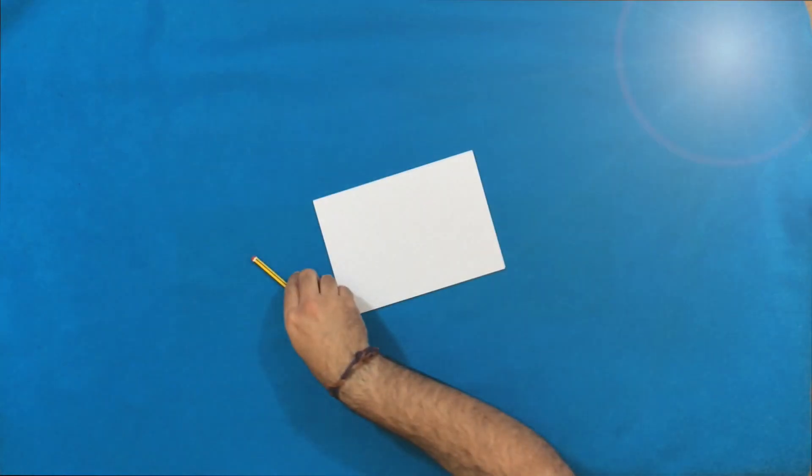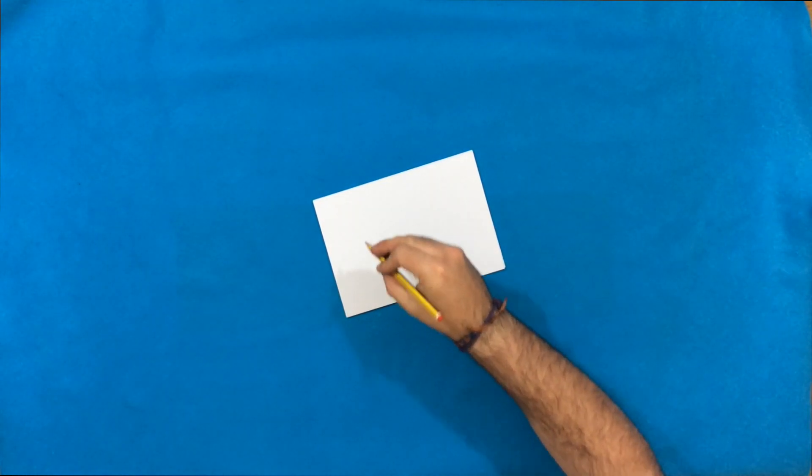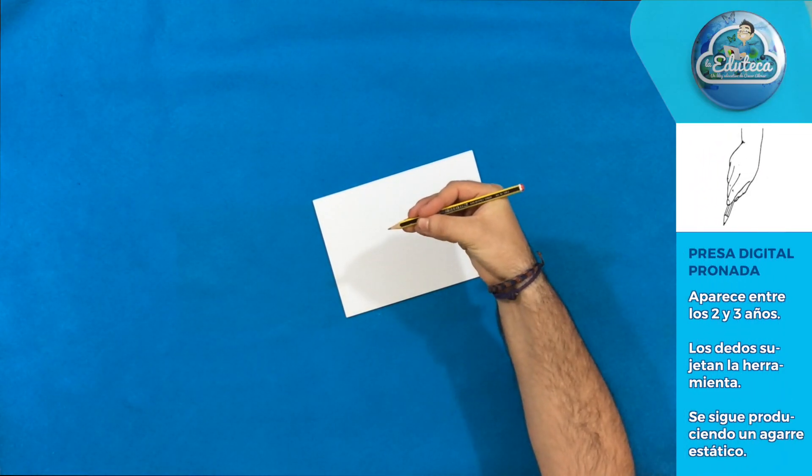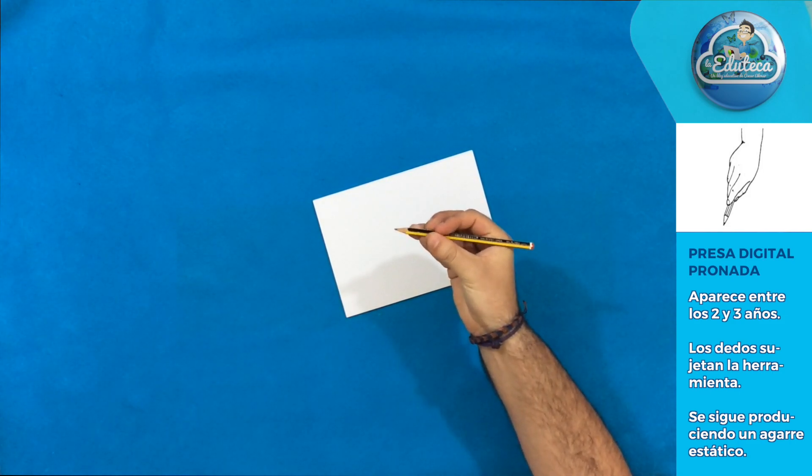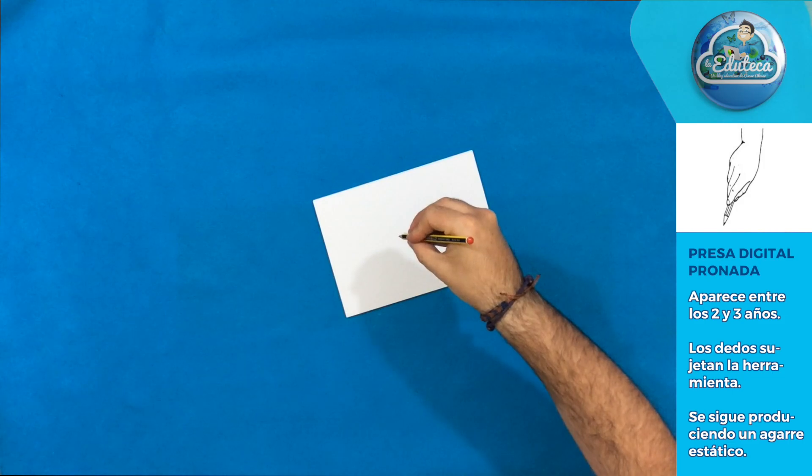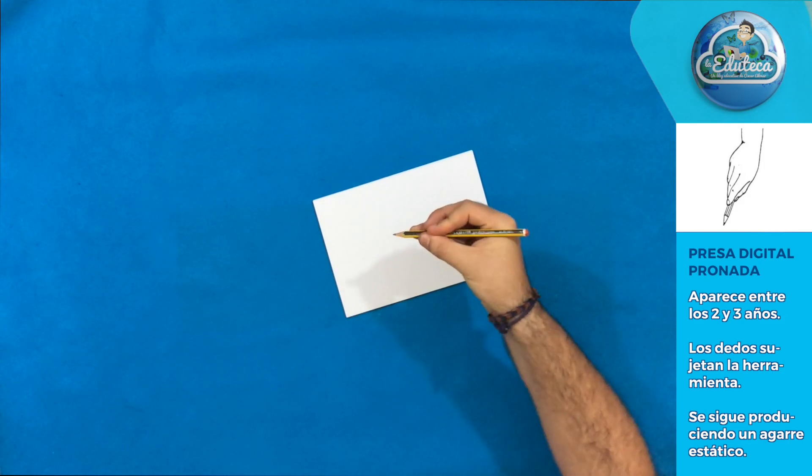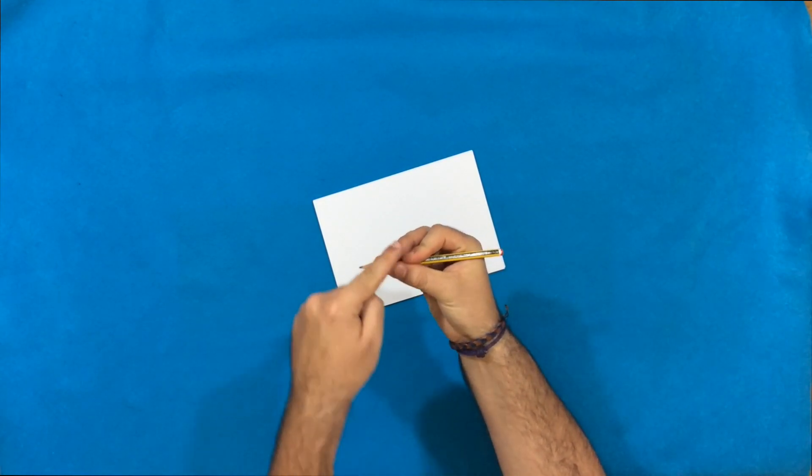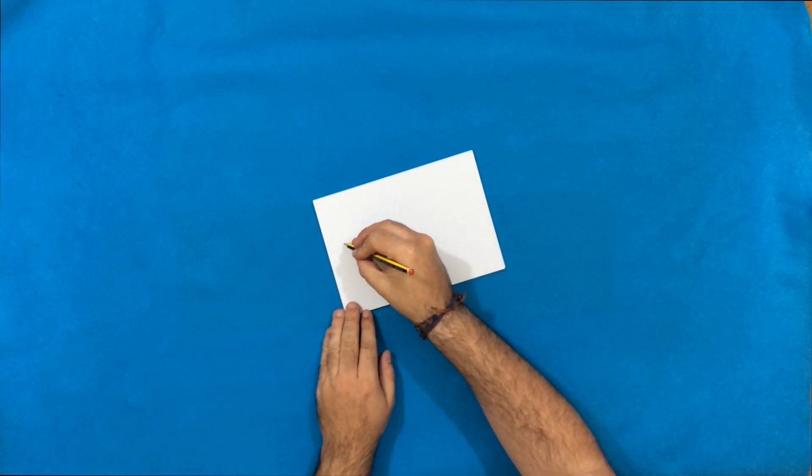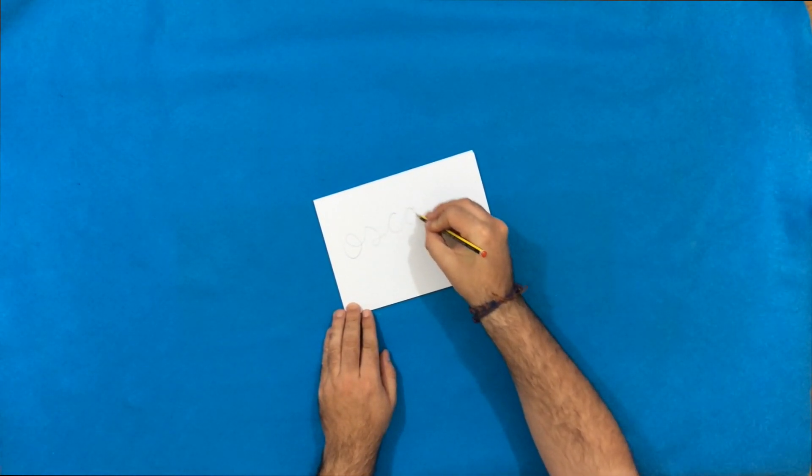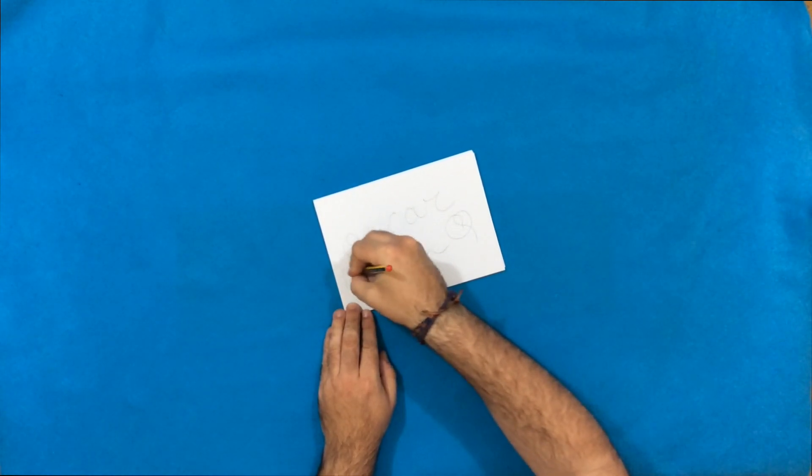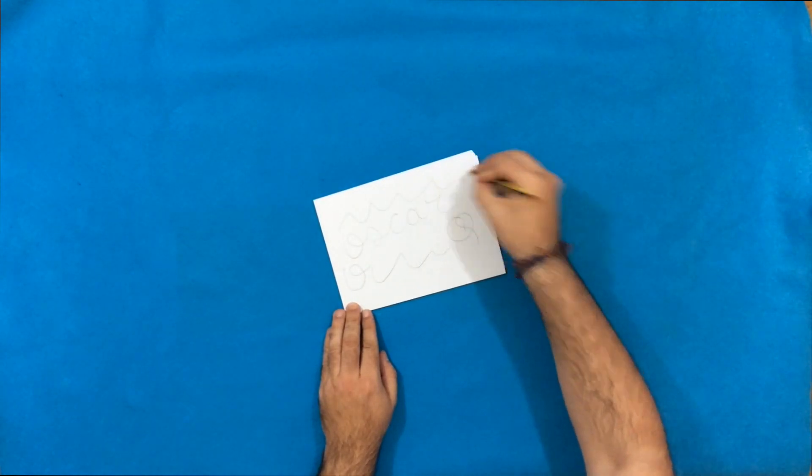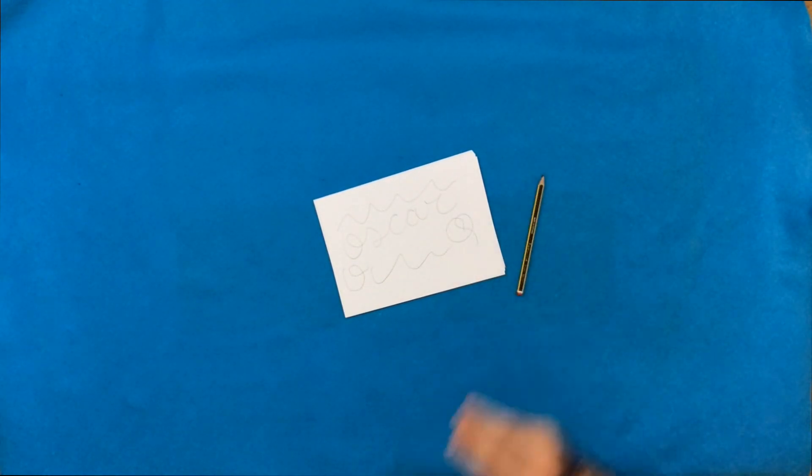Vamos a la siguiente fase que es la presa digital pronada. Aparece entre los 2 y 3 años, los dedos como veis sujetan la herramienta y el hombro comienza a ser un poquito más estable pero los movimientos van a proceder de segmentos más distales como son por ejemplo el codo o el antebrazo. Es un agarre menos estático que el anterior y se va produciendo una evolución en el desarrollo del agarre del lápiz.